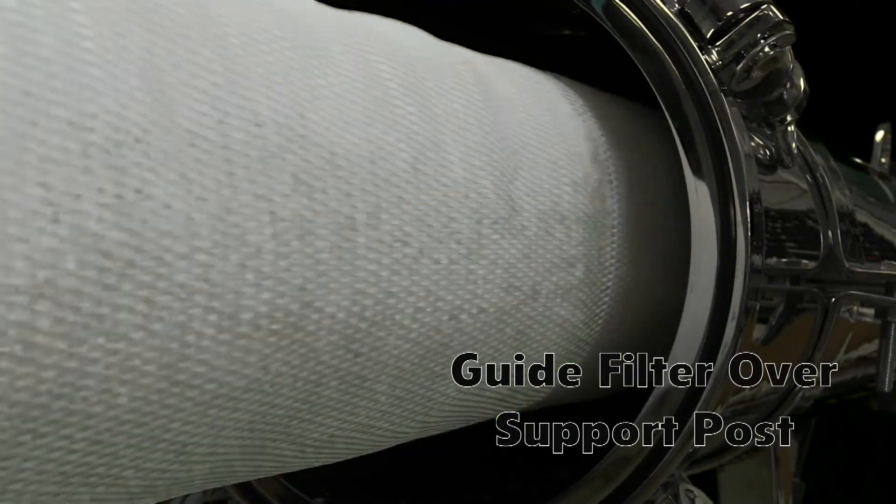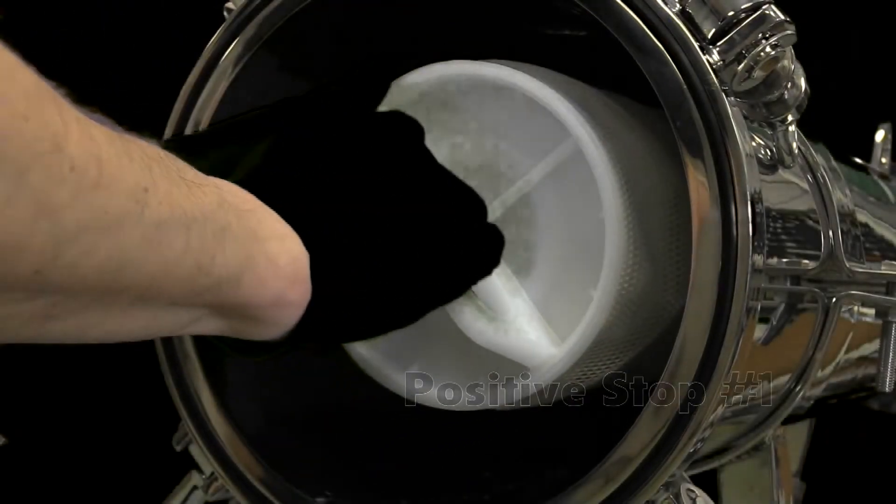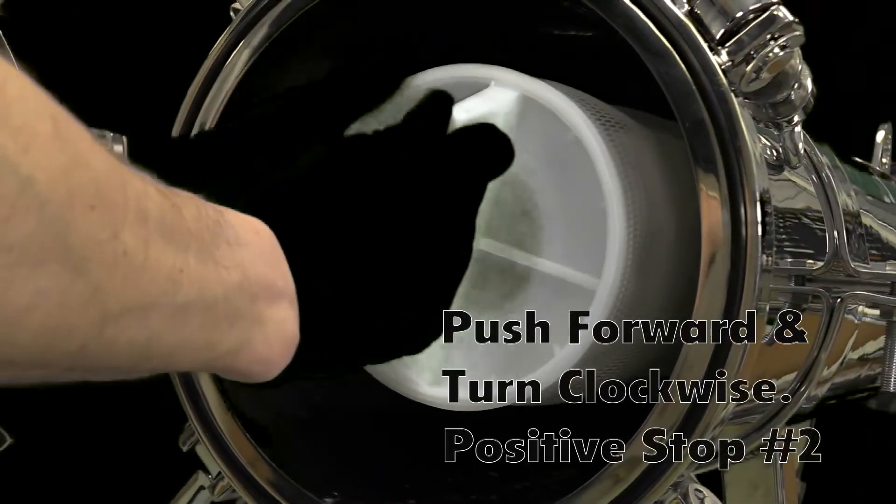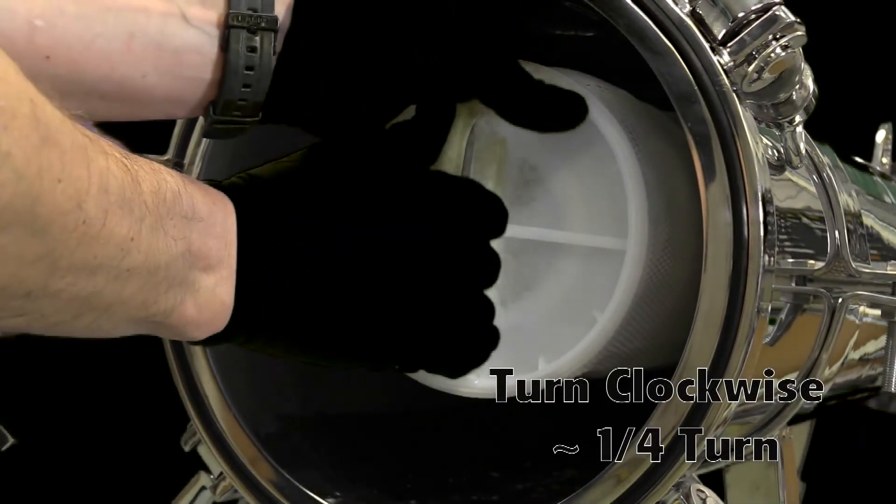Guide filter over support post. Positive stop number one. Push forward and turn clockwise. Positive stop number two. Turn clockwise one quarter turn.